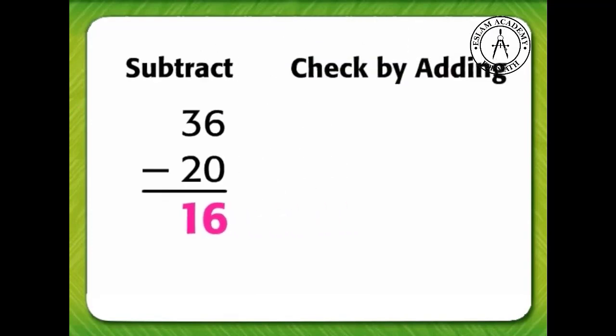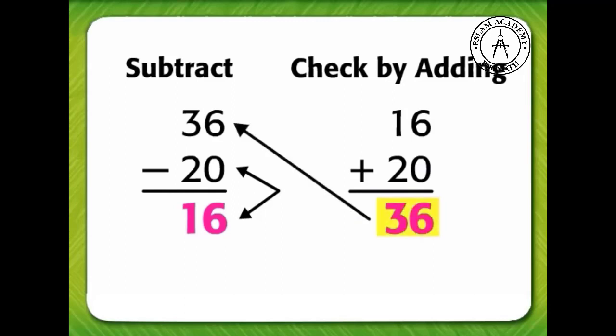Now, let's check our answer by adding 16 and 20. 6 plus 0 equals 6, and 1 plus 2 equals 3. The sum is 36, which matches the number we subtracted from.